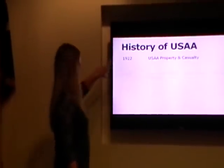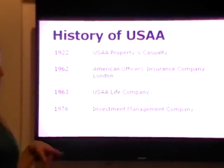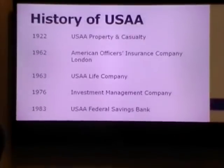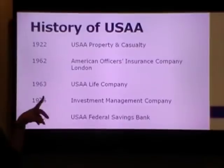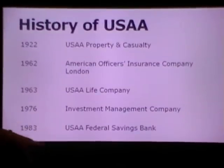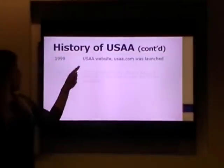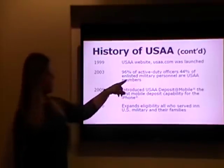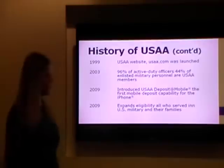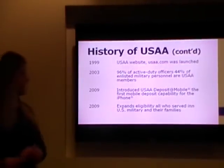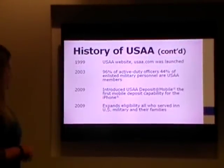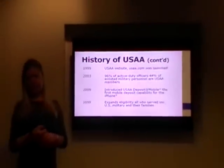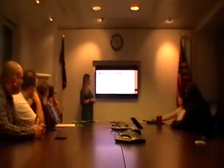Brief history timeline of USAA: it was founded in 1922 by 25 army officers to insure their cars because no one else would. American Officers Insurance Company, London — USAA Limited as we know today — was founded 50 years ago, so we had our anniversary this year. Life company and investment management company in the 80s, then the bank. Website in 1999. Expansion into the enlisted market at the end of the 90s and early 2000s, with growth of 96% active duty officers and 44% enlisted. Innovative iPhone capability was introduced in 2009 — the first mobile deposit app — and then big expansion in 2009 when we expanded to veterans, so anyone who ever served honorably with the military was eligible for membership.